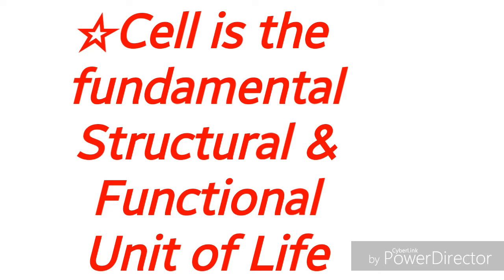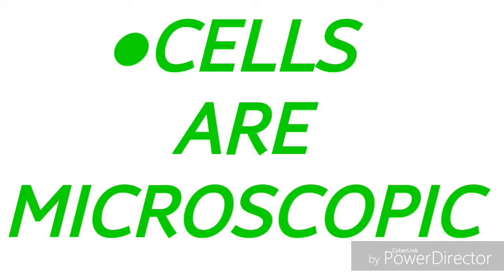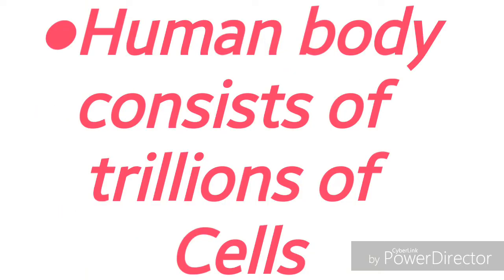Cell is the fundamental structural and functional unit of life. All living bodies are composed of cells. You can see here the structure of plant and animal cells. Cells are extremely small — they are microscopic. We cannot see cells with the naked eye; we have to use an instrument called a microscope to observe the structure of different cells.